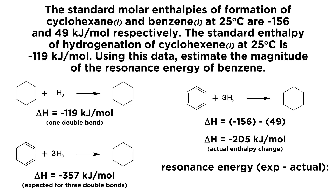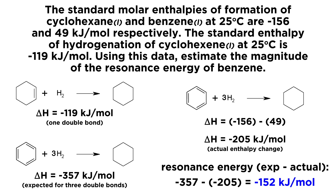To find the resonance energy, we take our expected value minus the actual value: negative 357 minus negative 205 equals negative 152 kilojoules per mole. That is the resonance energy — benzene sits 152 kilojoules per mole lower on an energy diagram than we would expect for a system with three isolated pi bonds. This was an interesting exercise in comparing expected versus actual enthalpy data to discern information about a phenomenon like resonance.